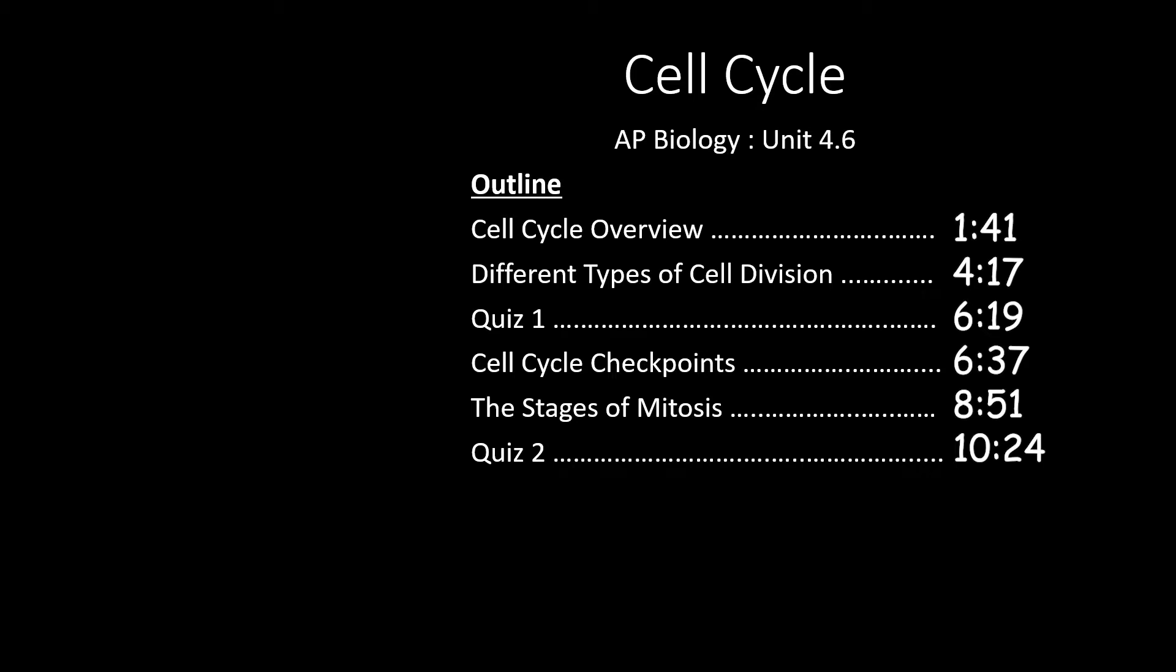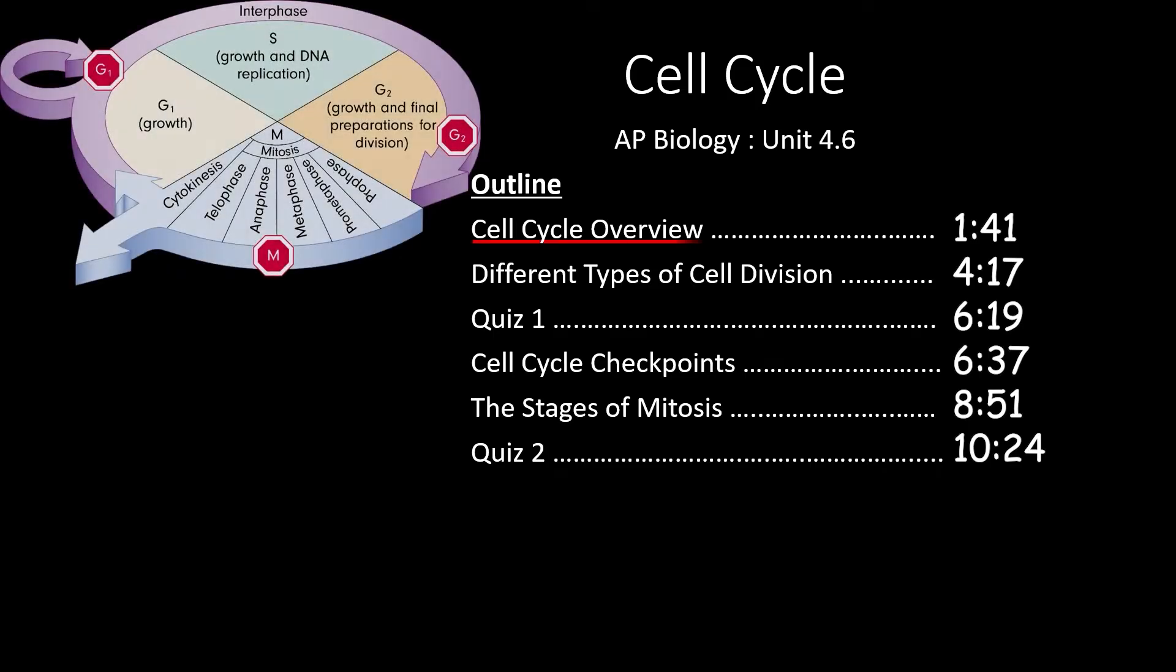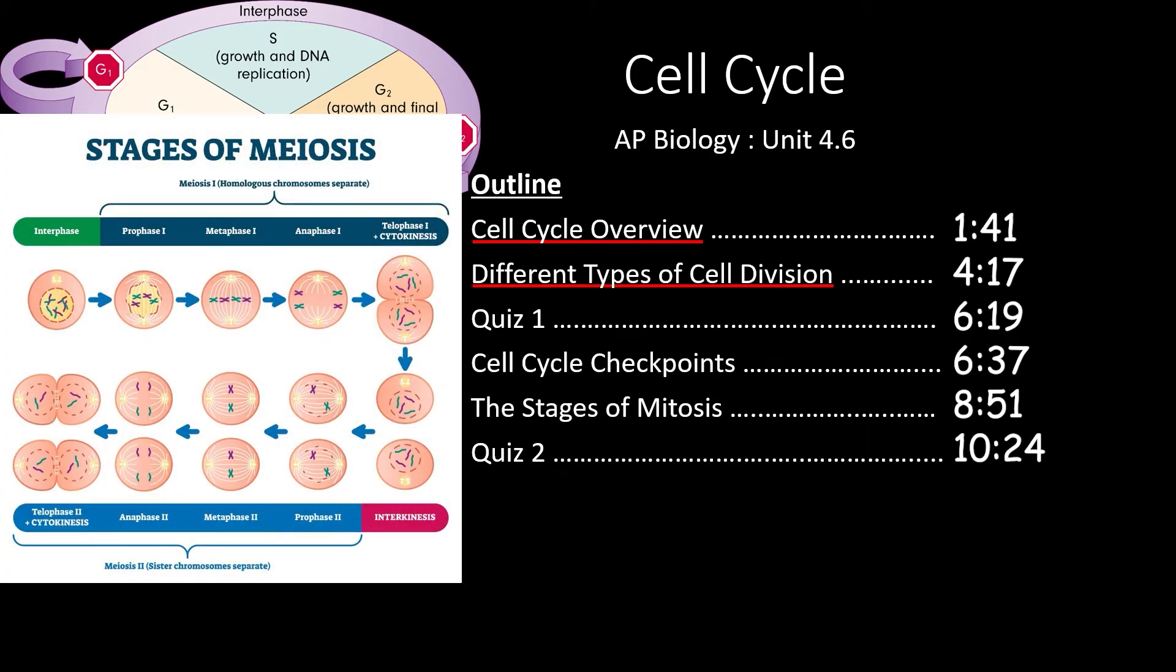This video covers section 4.6 of the AP Biology Curriculum. We'll start with an overview of the cell cycle and define some important terms. Then, we'll take a look at the difference between different forms of cell division including binary fission, mitosis, and meiosis.